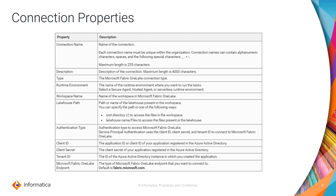You need to specify the runtime environment name, the workspace name in Microsoft Fabric OneLake, and the lake house path — which is the path or name of the lake house present in the workspace. The authentication type is service principal authentication, which uses client ID, client secret, and tenant ID to connect. The Microsoft Fabric OneLake endpoint will be the endpoint you want to connect to; by default it will be fabric.microsoft.com.